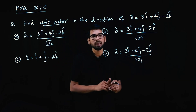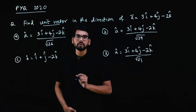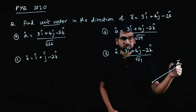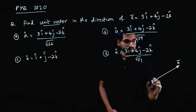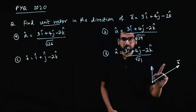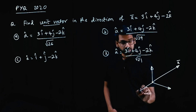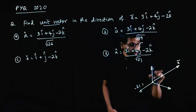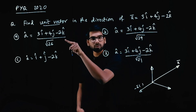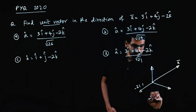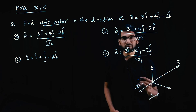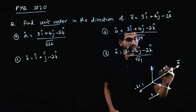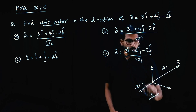Find the unit vector in the direction of the vector ā. So if you have a vector ā, in that direction you have a unit vector. A unit vector has length 1. The magnitude of a unit vector equals 1. So this ā vector has a magnitude of |a|.